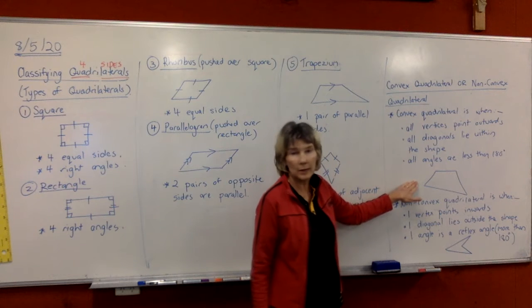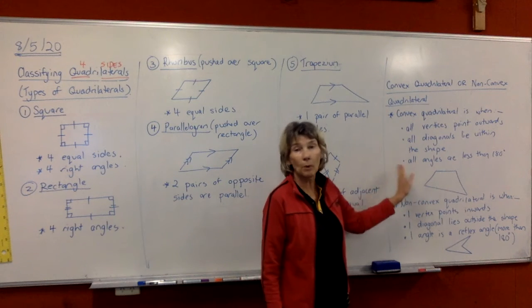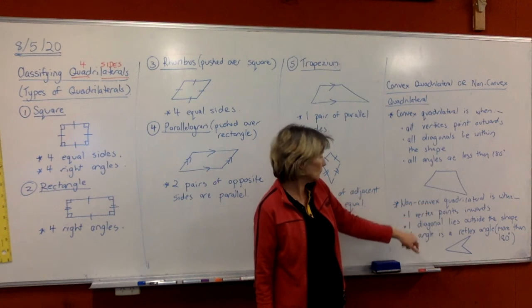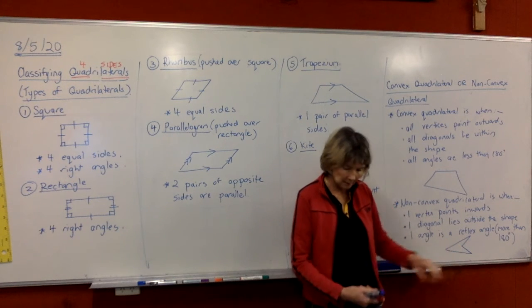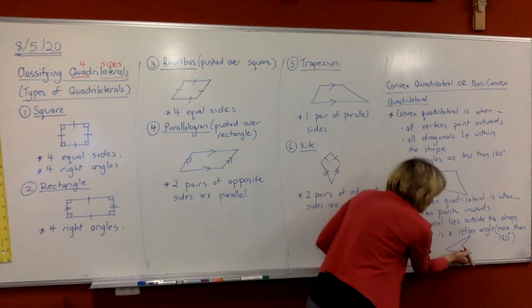So up here in the convex quadrilateral, all the vertices point outwards. Down here in the non-convex quadrilateral, one of the vertices, this one here, is pointing inwards.